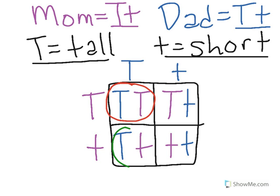Here we have the two heterozygous offspring options, and both of those offspring will be tall because they both have a dominant trait. And then lastly, we have the homozygous recessive offspring option, and this will be our only short offspring.